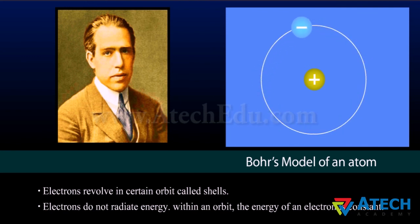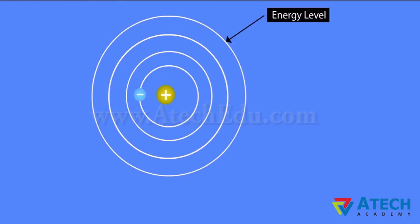When the electrons revolve, they do not radiate energy and hence the atom remains stable. Electrons revolve in certain orbits called shells. Electrons do not radiate energy within an orbit. The energy of an electron is constant.